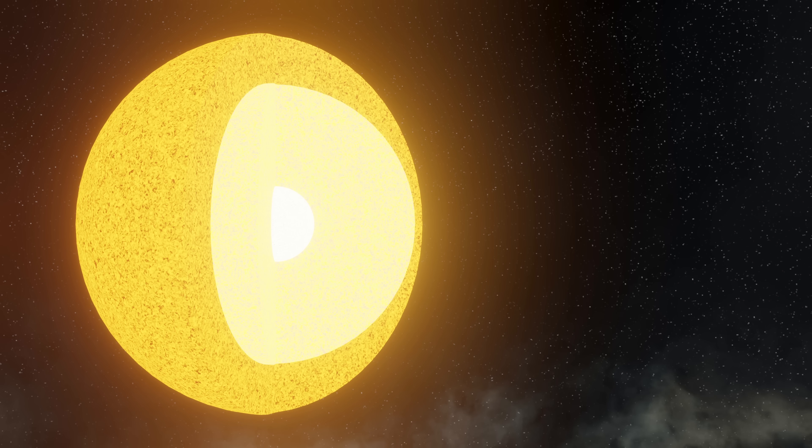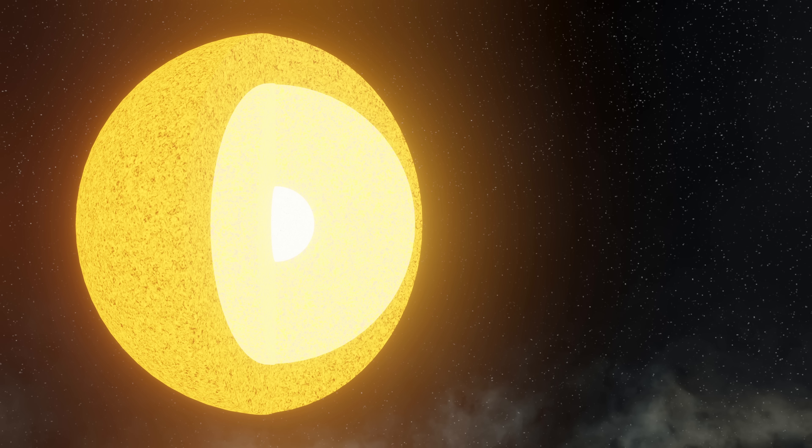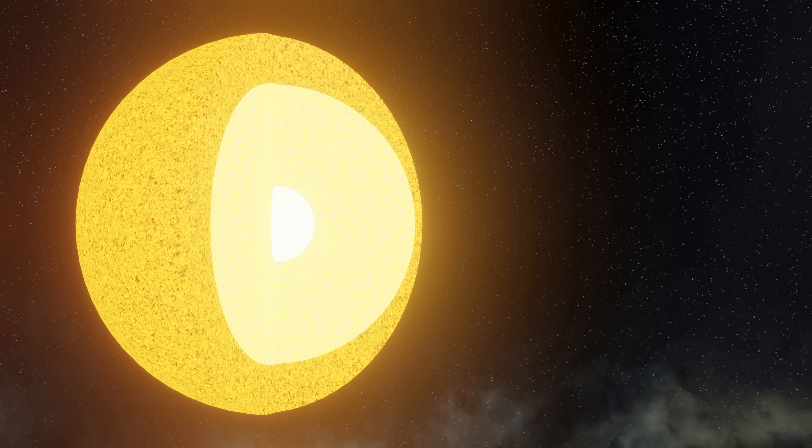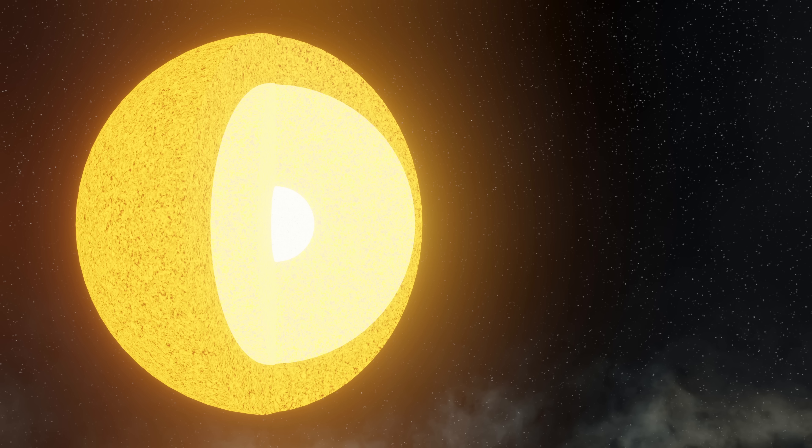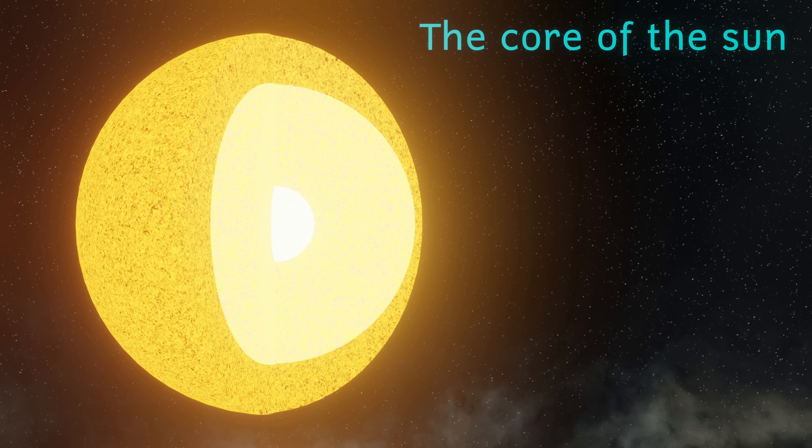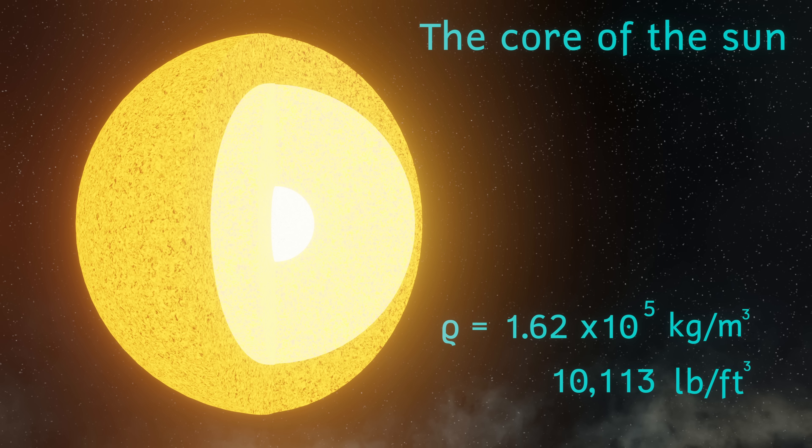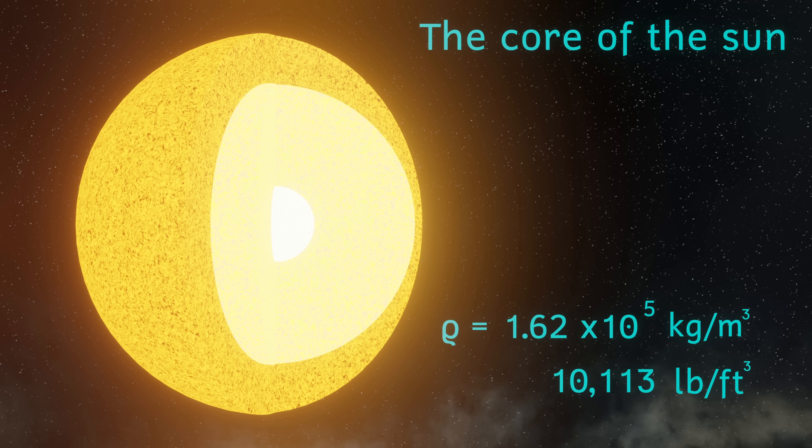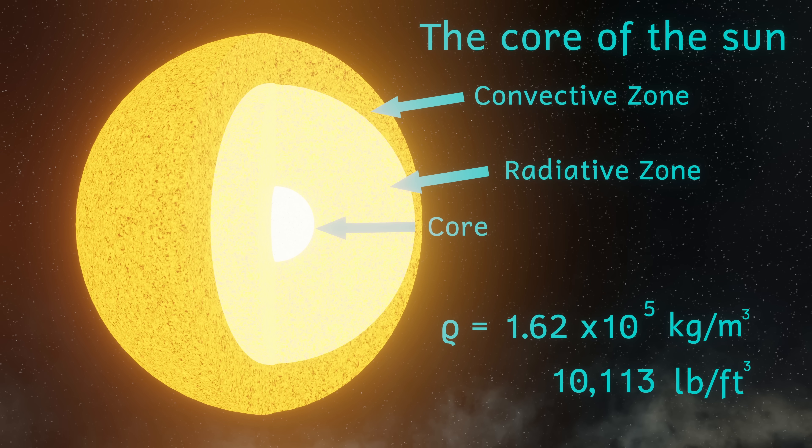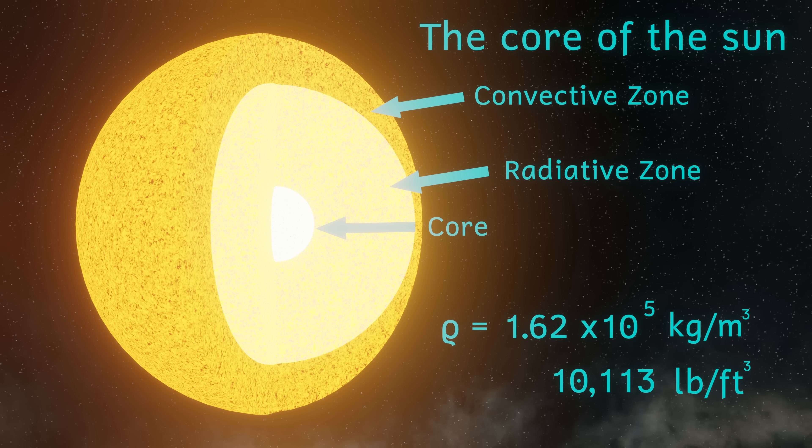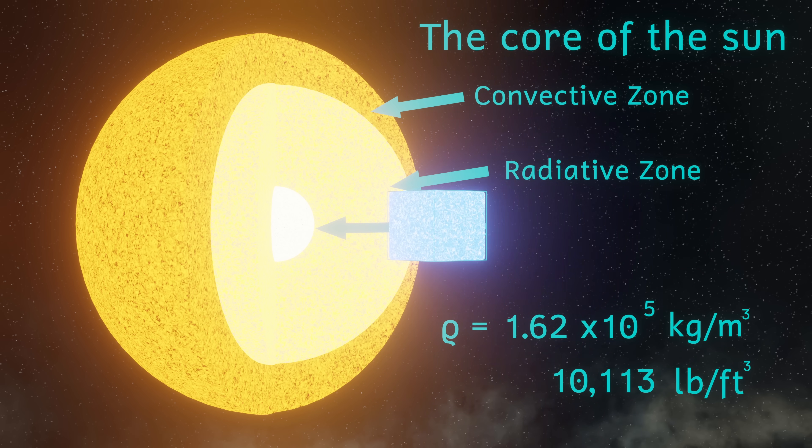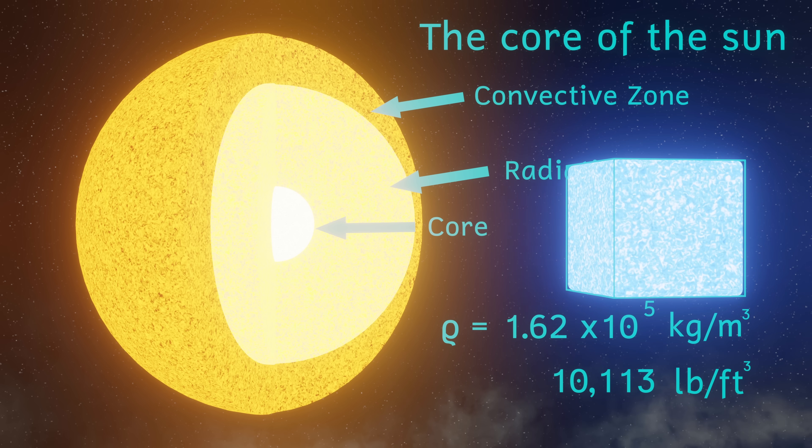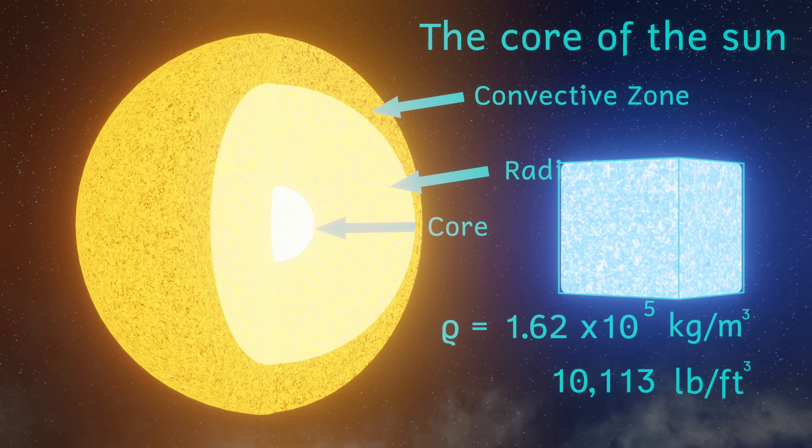Let's move up another factor of 10 to 10 to the 5 kilograms per meter cubed. This would then be 100,000 kilograms per meter cubed. The core of our sun is estimated to have a density of 1.62 times 10 to the 5 kilograms per meter cubed. In other words, 162,000 kilograms per meter cubed. The core of the sun consists of a super dense, super hot plasma of ions and electrons. And it's in the core of the sun that nuclear fusion takes place, generating almost all the energy that the sun produces.